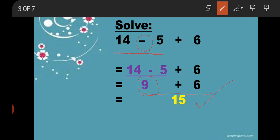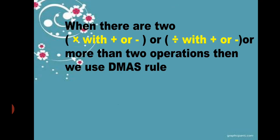Now when there are two operations like multiplication with addition or subtraction, or division with plus or minus, or more than two operations, then we use the DMAS rule.